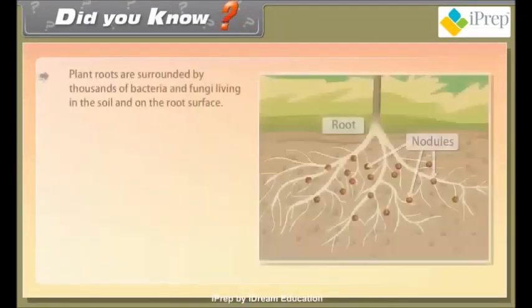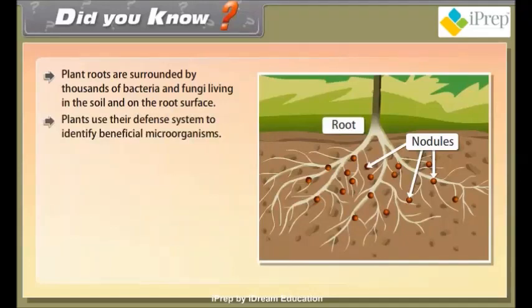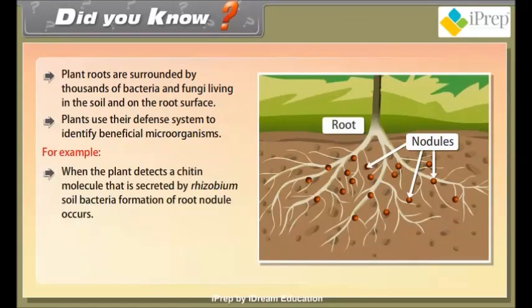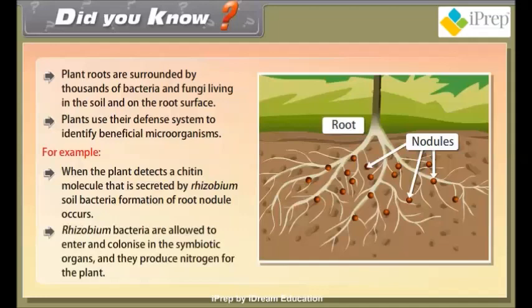Did you know? Plant roots are surrounded by thousands of bacteria and fungi living in the soil and on the root surface. Plants use their defense system to identify beneficial microorganisms. For example, when the plant detects a chitin molecule secreted by Rhizobium soil bacteria, formation of a root nodule occurs. Rhizobium bacteria are allowed to enter and colonize in the symbiotic organs, and they produce nitrogen for the plant.